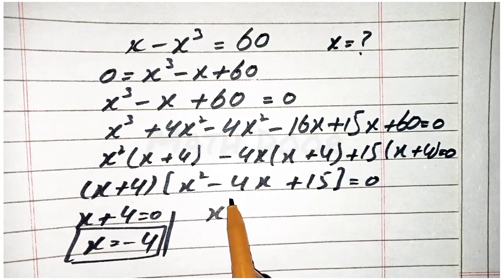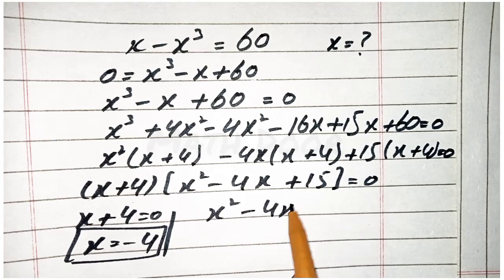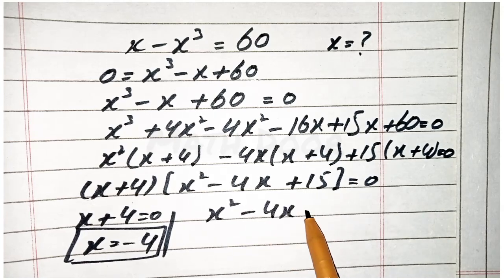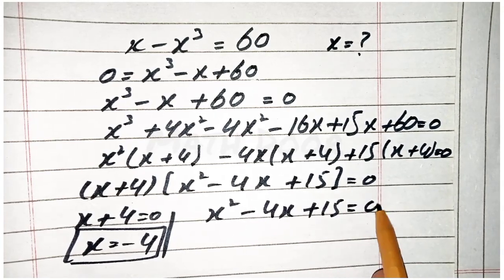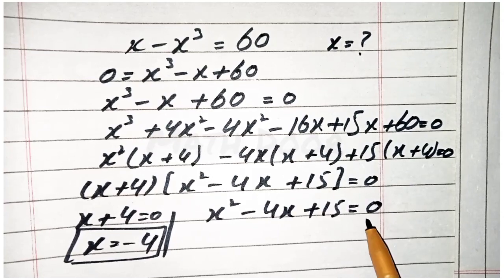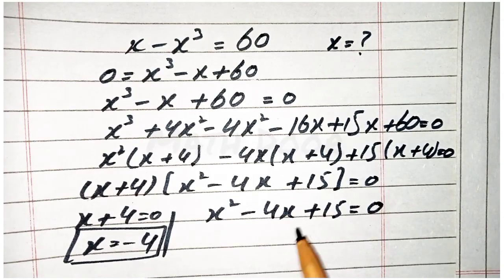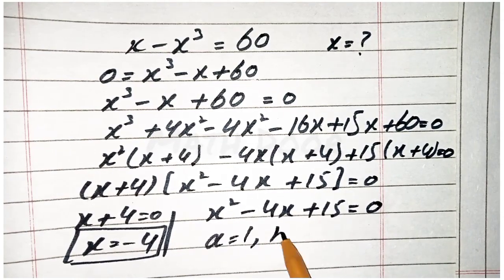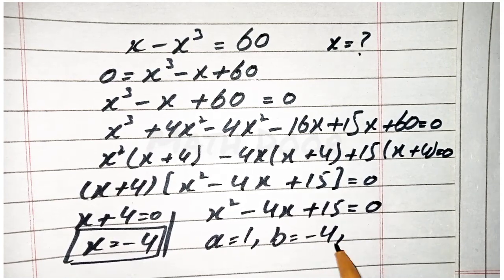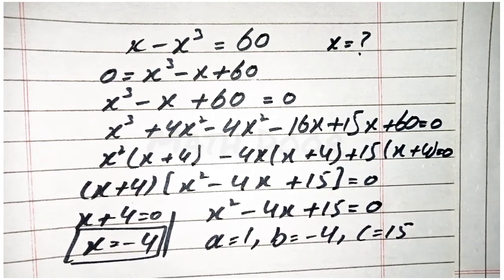Now to solve x squared minus 4x plus 15 is equal to 0, we apply the quadratic formula. The value of a is 1, the value of b is minus 4, and the value of c is 15.